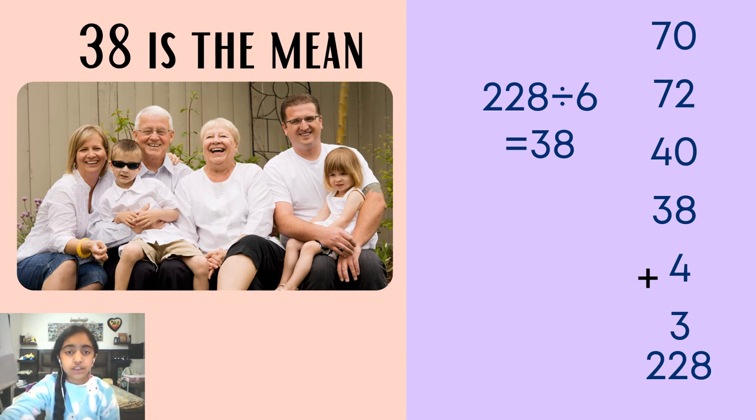Here are the ages of all the different people in the family. The ages are 70, 72, 40, 38, 4, and 3. When we add all of these, we get 228.